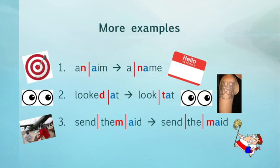Here are a few more examples. Number one: 'an aim' can sound like 'a name' — they both can sound exactly the same. Number two: 'looked at' can sound like 'look tat' — tat is an abbreviation for a tattoo — so they both can sound like 'looked at'.